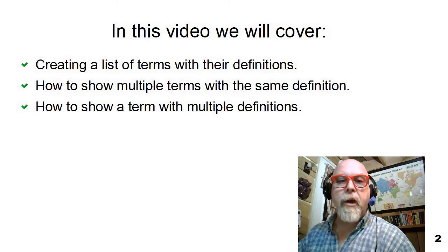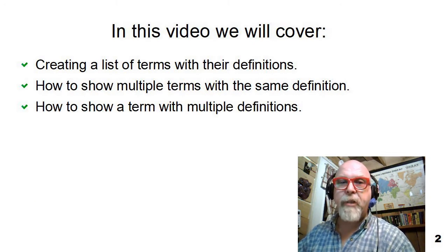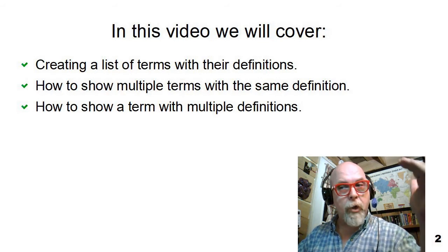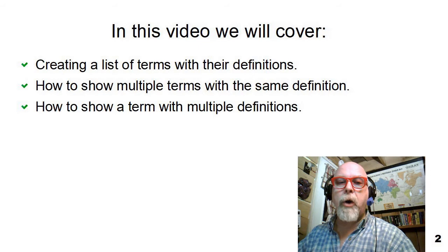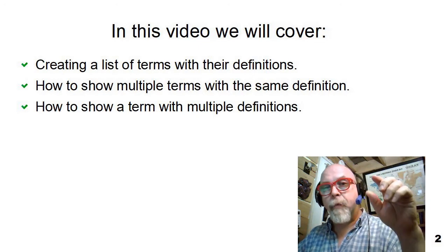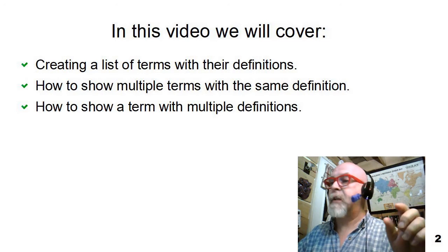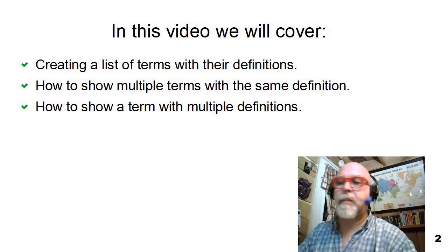In this video, we're going to cover what a definition list is. A definition list is a list of words or terms and their definitions. We're going to show how multiple terms can share definitions, how a term can have multiple definitions, and how a definition list is nested.